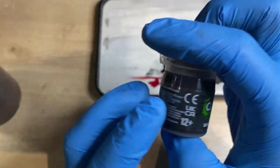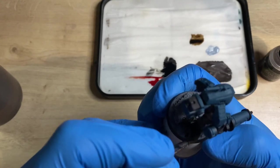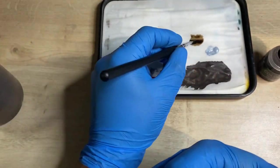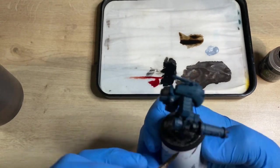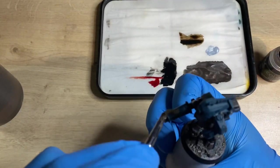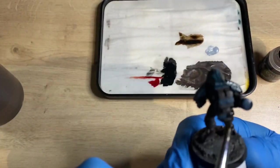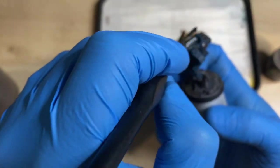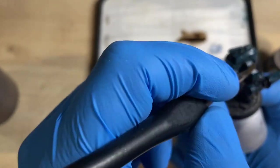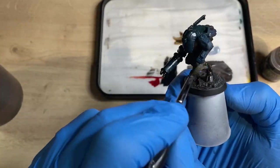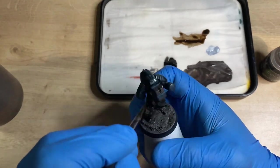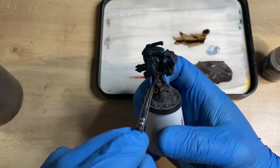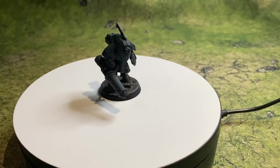Once that's all dry and set solid, what we want to do is move on to our Agrax Earthshade, and it's quite an easy step this, because we're going to be washing the base and the model all in the same shade. So just make sure you've got just enough on your brush that nothing's dripping off. Place it in an area on the model that you can get to easily to start with, and just move it around. We're looking to drive it into all of the recesses. We're looking to avoid any pooling, any dripping, anything like that, and we're just making sure that there's kind of like a thin film all over the model.